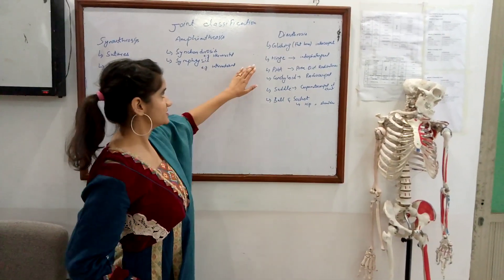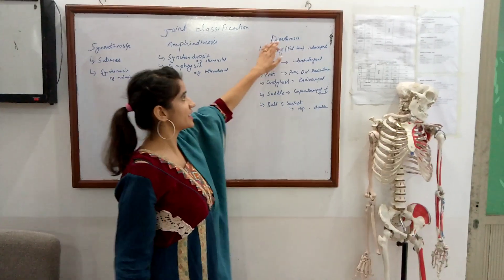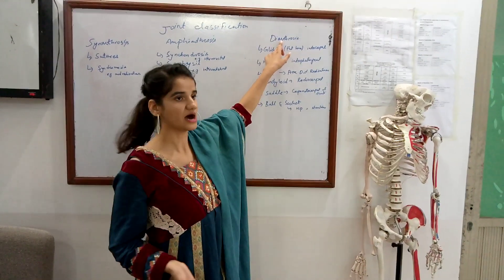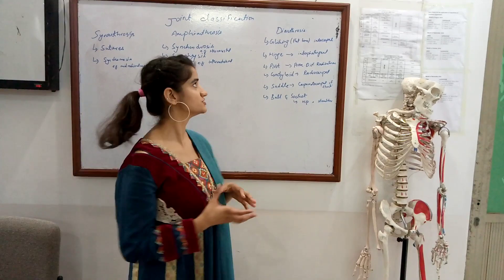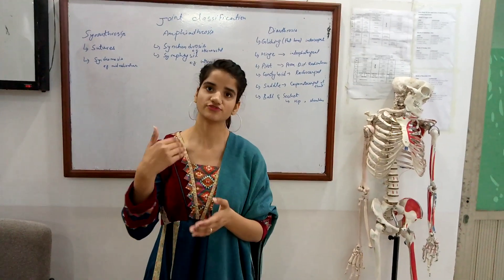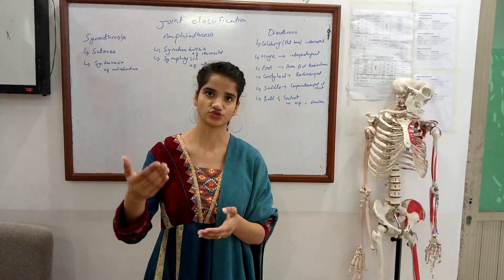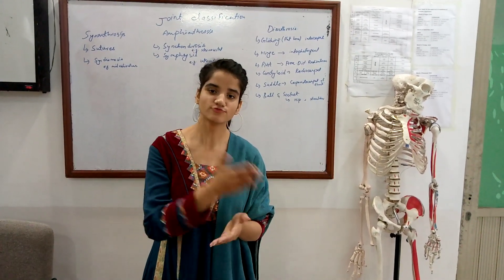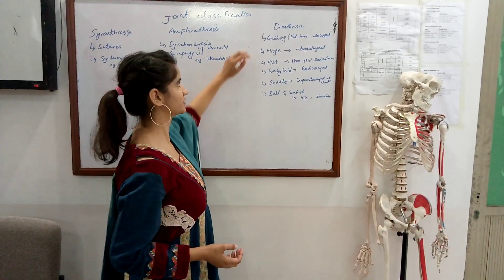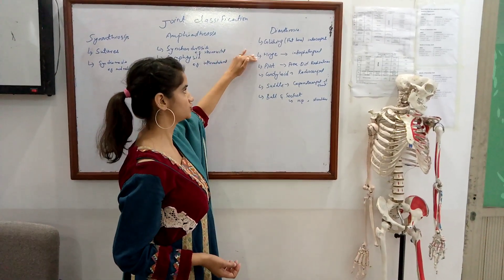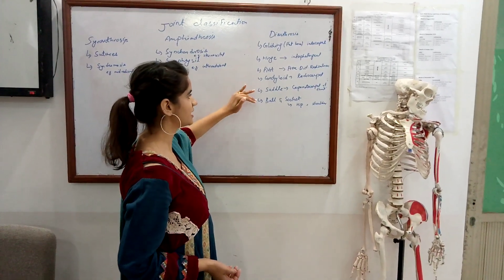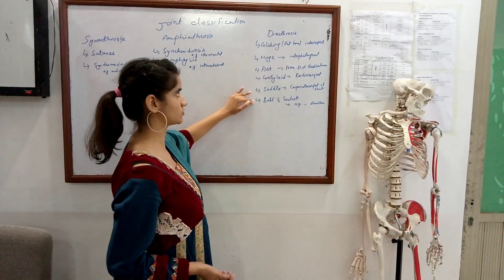The last category is diarthrosis. 'Dia' means through and 'arthron' means joint, so diarthrosis are joints which allow free motion — they are freely movable joints. Diarthrosis has six sub-categories: gliding, hinge, pivot, condyloid, saddle, and ball and socket.